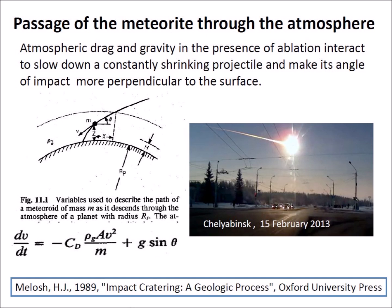The Earth's atmosphere has a thickness of 100 kilometers, and it affects the passage of extraterrestrial objects. Atmospheric drag and gravity, in the presence of ablation, interact to slow down a constantly shrinking projectile and make its angle of impact more perpendicular to the surface.